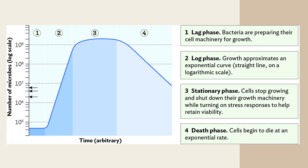Unless nutrients are replenished and waste products are removed, the bacteria progress to the death phase. More cells die than are produced and the number of cells in the population declines. The duration of this phase varies from a few hours to a few days. Of course, any species that were able to form spores or endospores will survive at this point.